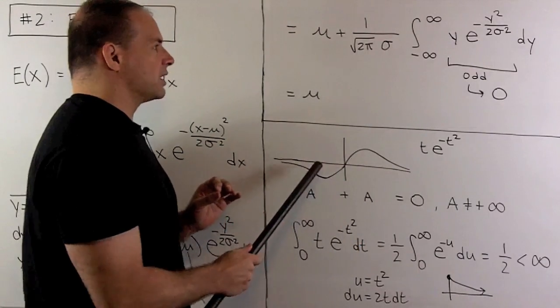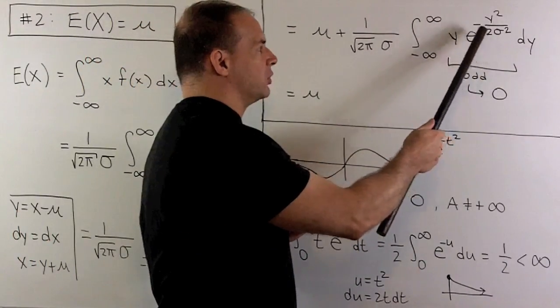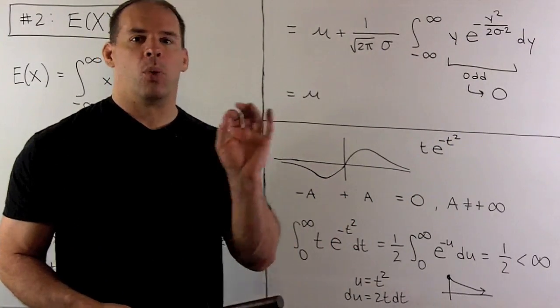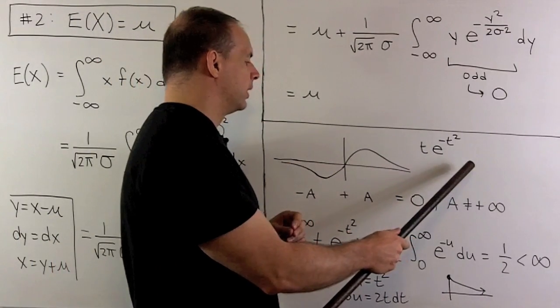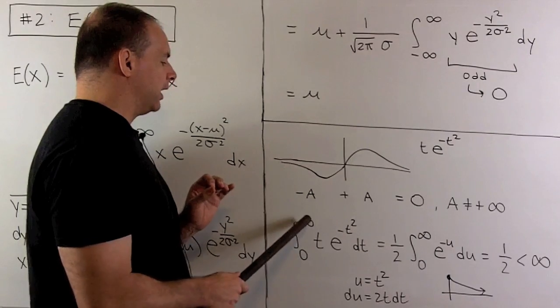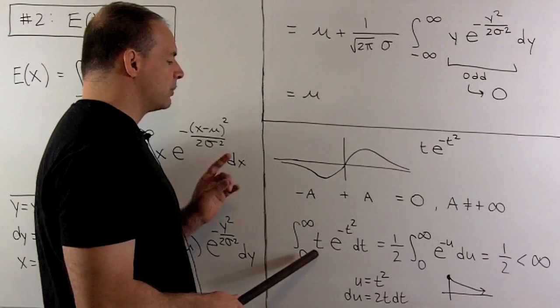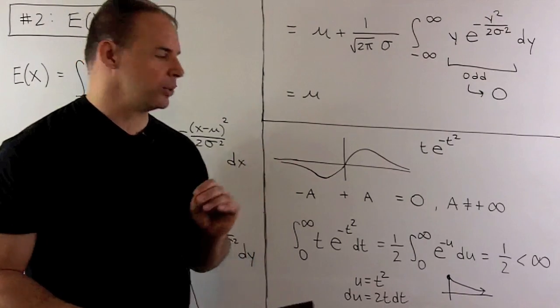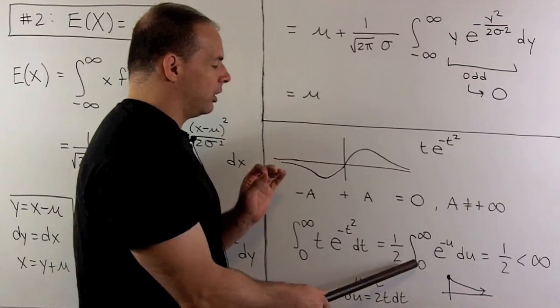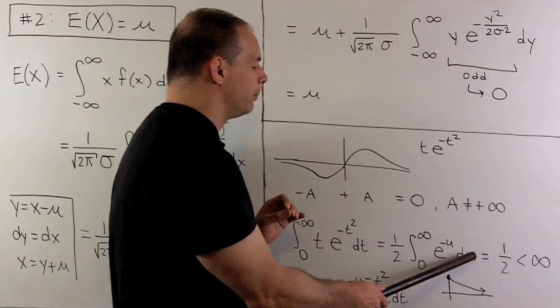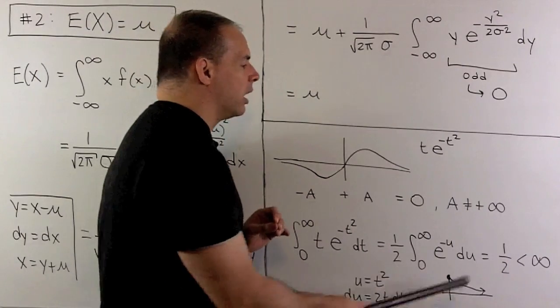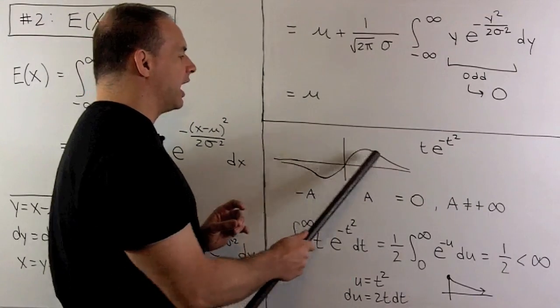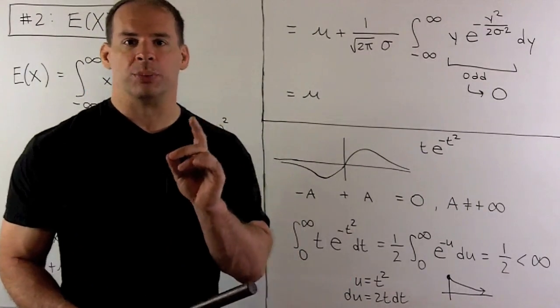Now, to show that each of these has finite area, first thing I do is a substitution to get rid of the 2σ². Since we're not interested in the actual number, we won't worry about how we substitute. Now, we integrate from zero to infinity to get this area. So we'll substitute u equals t². du equals 2t dt, or dt equals du over 2t. So we'll have one-half integral from zero to infinity of e to the minus u du. That we know how to do. So we're going to get a one-half, which is finite. So this area is finite, which means this area is finite, and we're going to cancel out. So the mean of our distribution is equal to μ.